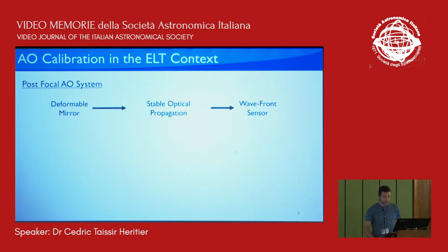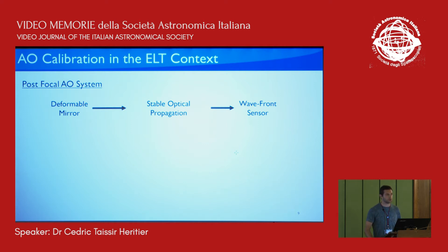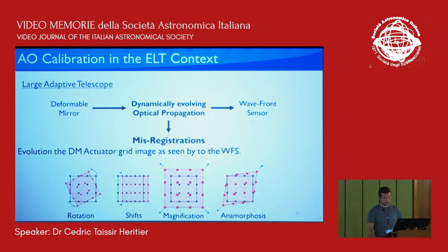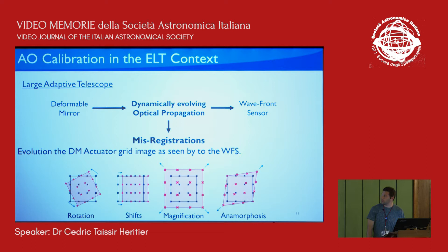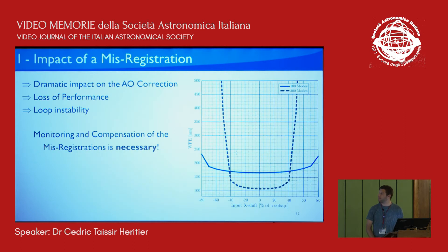Here is the summary. For a classical AO system, your system is in a box and nothing is moving — you have a stable environment, so you can measure your interaction matrix and it should remain stable during observation. For a large adaptive telescope, you will have to deal with a dynamically evolving environment between the deformable mirror and the wavefront sensor. This means dealing with misregistrations — defined as an evolution of the DM actuator grid image as seen by the wavefront sensor — including rotation, shift, or anamorphosis.